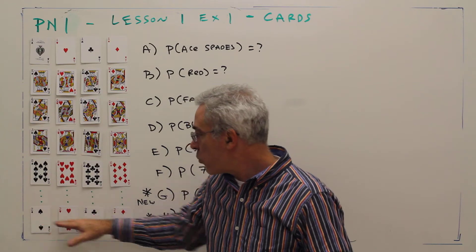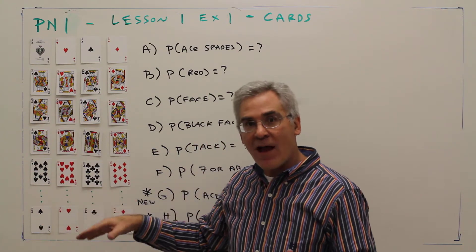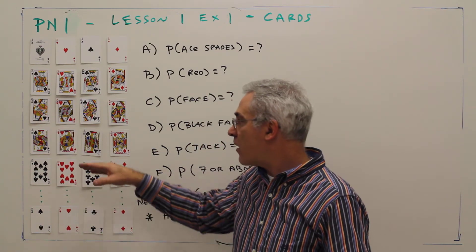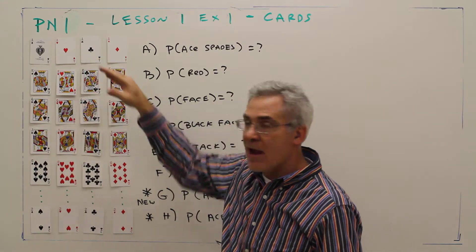The ranks are from 2, 3, 4, 5, 6, 7, 8, 9, 10, Jack, Queen, King, Ace.